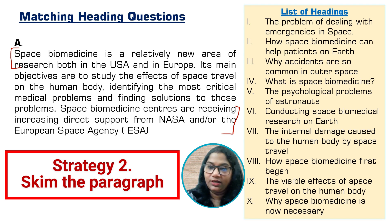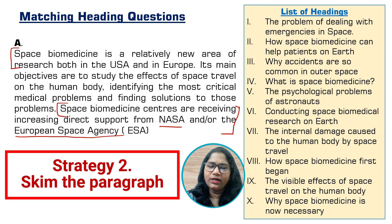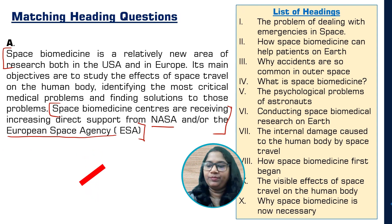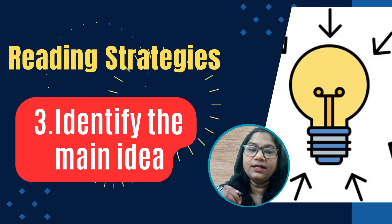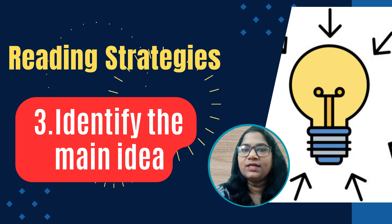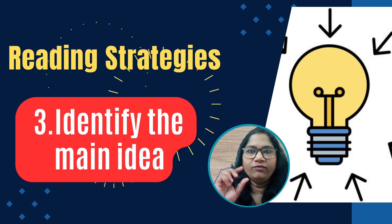The last sentence says space biomedicine centers are receiving increasing support from NASA and ESA (the European Space Agency). With just these two sentences, the first is giving a definition of space biomedicine and the second is talking about the support it receives from various centers. That completes the second step — skimming the paragraph. The third step is identifying the main idea: the first sentence is a definition introducing the topic, and the last sentence tells us about the support from different centers.